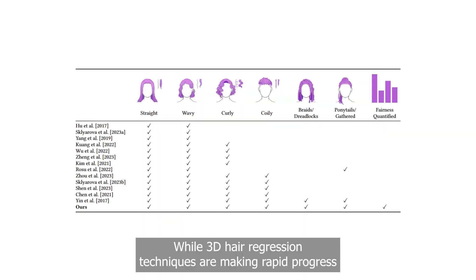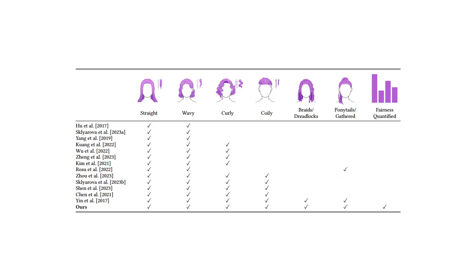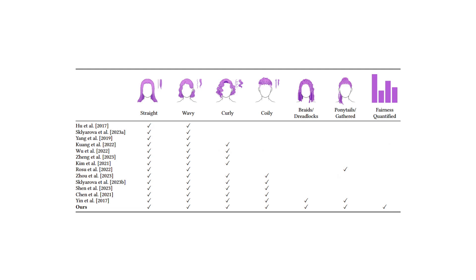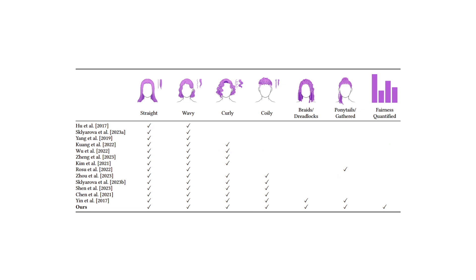While 3D hair regression techniques are making rapid progress in extending support to more complex hairstyles, representing coily hair strands such as braids and dreadlocks, and gatherings such as ponytails and buns, remains an open problem.